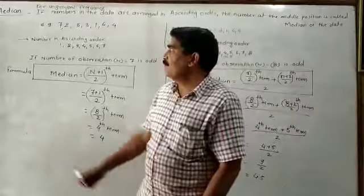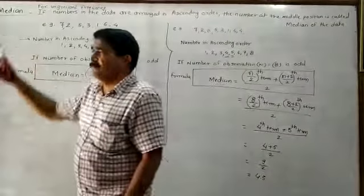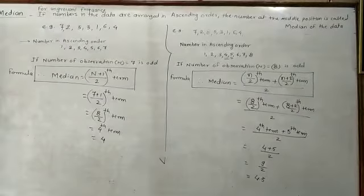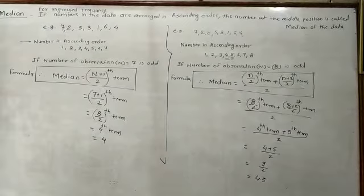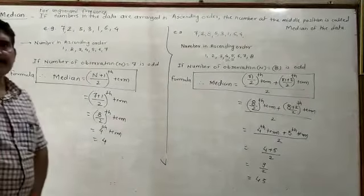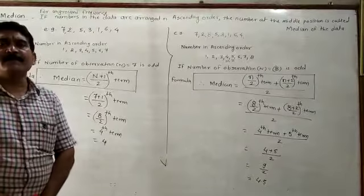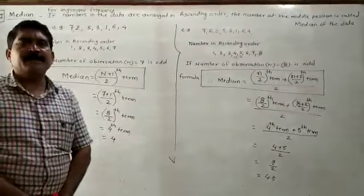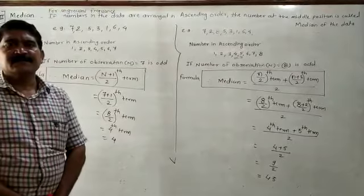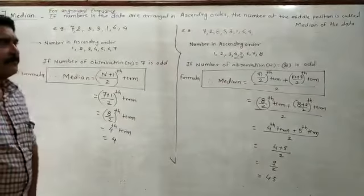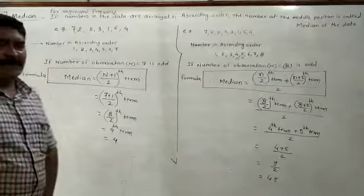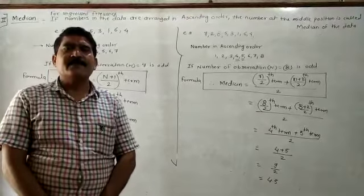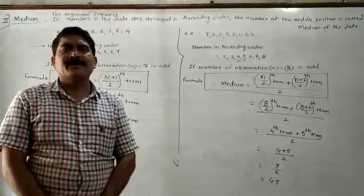We start with the new topic of this lesson: median. This is the second topic of this lesson. Median indicates the middle one — the middle number is called the median. For the grouped frequency distribution and the ungrouped frequency distribution, you have to find out the median using different formulas.